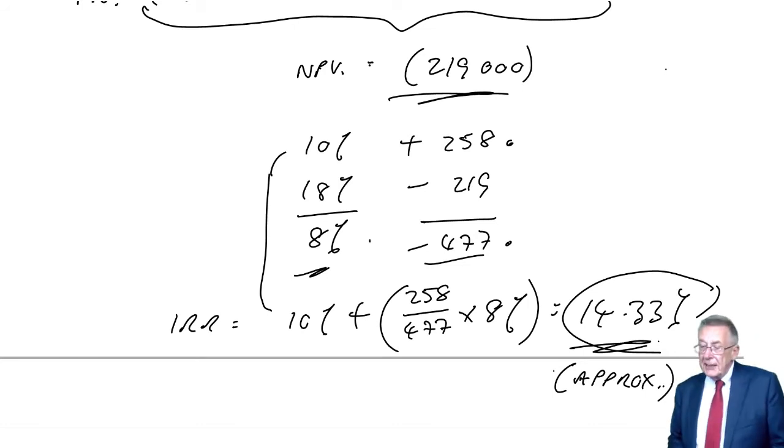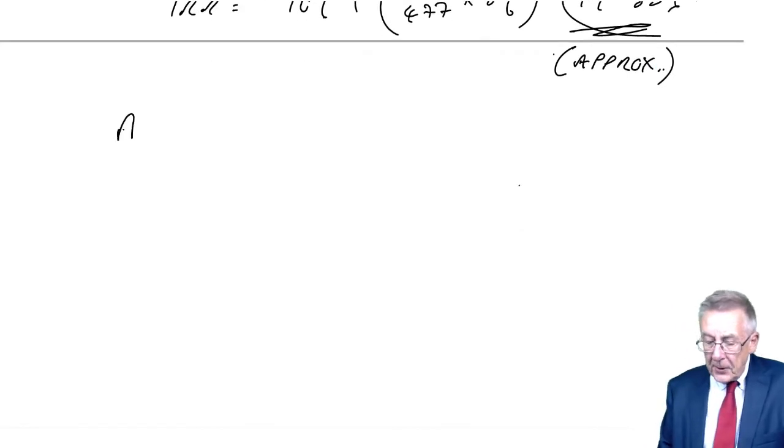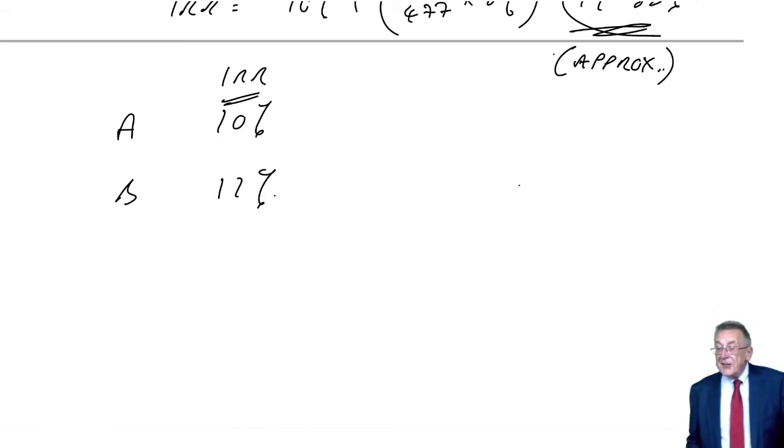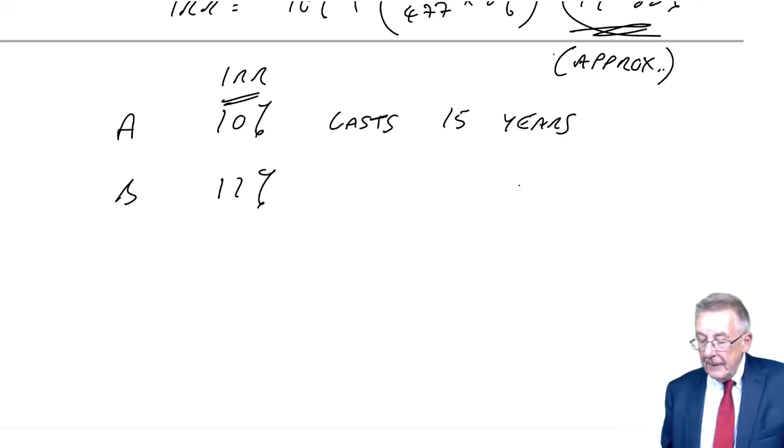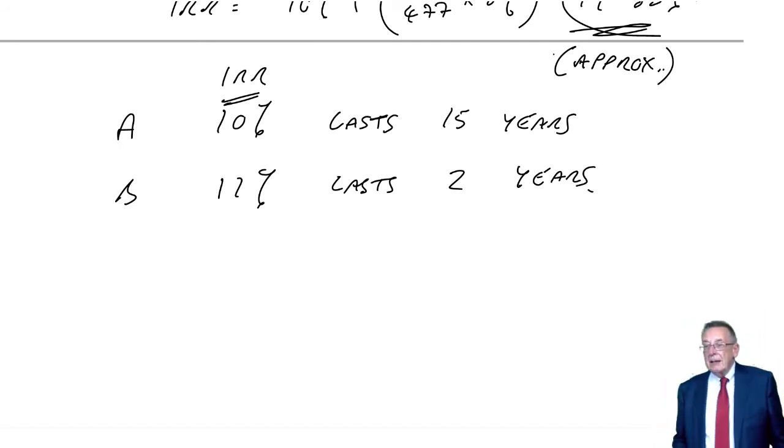But where there could be a problem is if you were comparing two projects. If I said project A gave a return of 10% and project B gave a return of 12%, and I said which project would you prefer, I think you'd probably say you'd prefer project B. 12% is better than 10%. But there's a danger. Suppose, for instance, I said project A lasted 15 years, project B only lasts two years. Now then, which would you prefer?